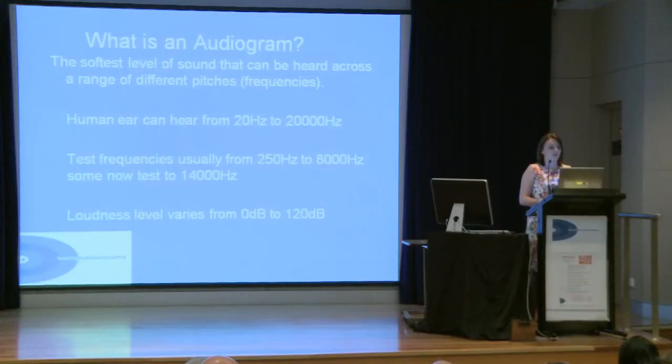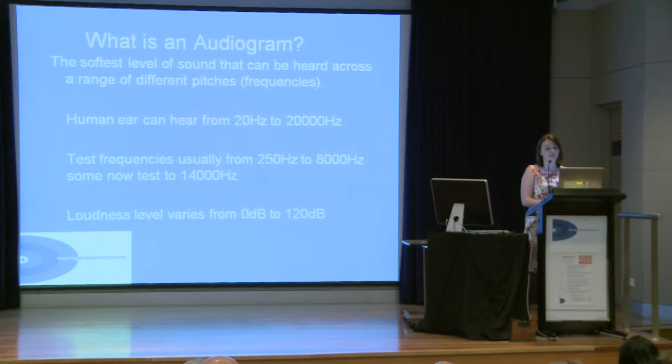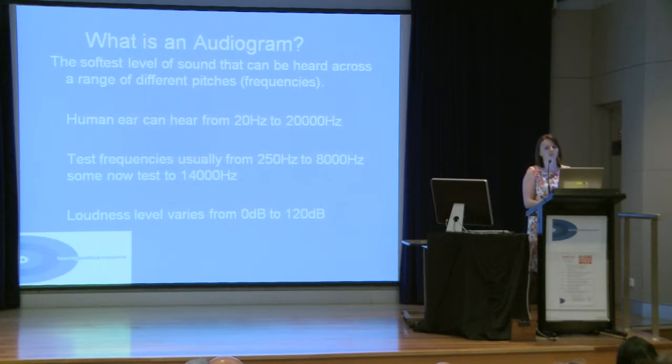What we're looking to measure with an audiogram is to determine the softest sound that you can hear across many different pitches in each ear. Our ears can hear from 20 Hz up to 20,000 Hz. A standard audiogram looks at between 250 Hz up to 8,000 Hz. In some situations they may test to high frequencies up to 14,000 Hz. The reason we test between 250 and 8,000 Hz is because this is where the majority of speech lies, so speech is our priority.